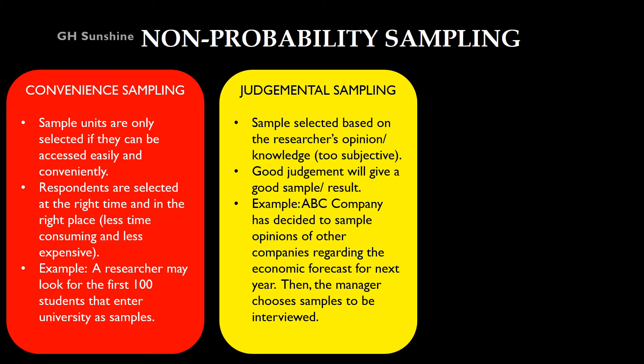For example, ABC Company has decided to sample opinions of other companies regarding the economic forecast for next year. The manager chooses the samples to be interviewed. This is judgmental sampling because the manager chooses based on his opinion or knowledge — there is no sampling frame. If he has good knowledge, the sample will be representative.